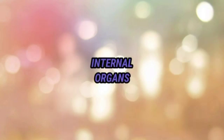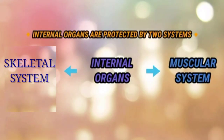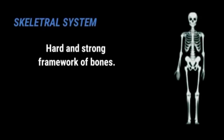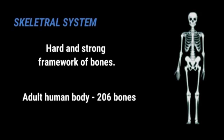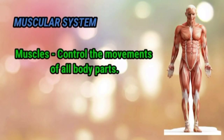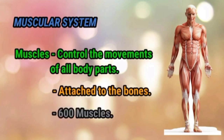As we know, the internal organs are present inside our body, so these organs are protected by the skeletal system and the muscular system. The skeletal system is a hard and strong framework of bones. The muscular system comprises muscles that control the movements of all body parts. There are over 600 muscles in our body.